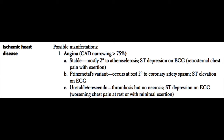Ischemic heart disease is a condition where the myocardium is starved for oxygen or other types of nutrients. Ischemic heart disease may manifest itself one of four ways. The most common is angina. Angina usually occurs when a coronary artery, which supplies a large territory of myocardium, is narrowed to greater than 75% of the initial diameter.